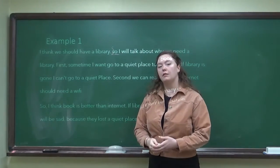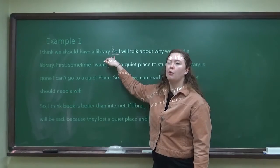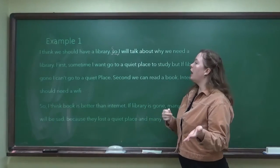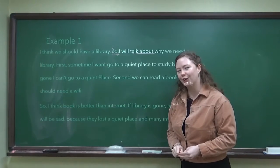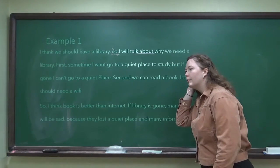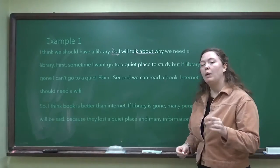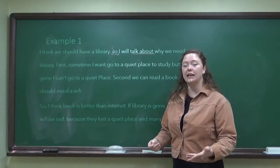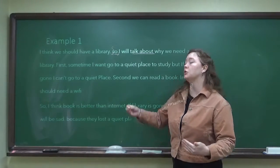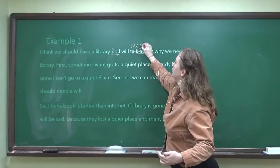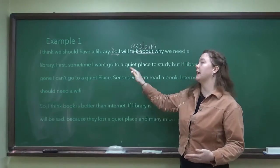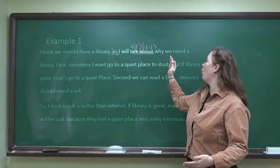Also, whenever you have this introductory adverb, you always need to follow it with a comma — 'So,' comma. Next: 'I will talk about.' When we're writing essays, we usually don't say 'talk about.' Instead, you could say 'write about' — that would be correct. But in English essays, it's more usual to say 'explain.' We love the word 'explain' in English, especially in essays. So, this sentence should say, 'So, I will explain why we need a library.' And remember, this is your new paragraph — go to a new line.